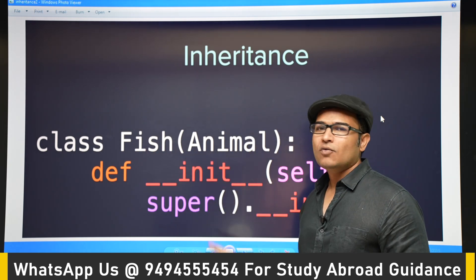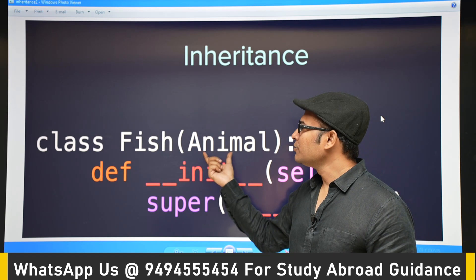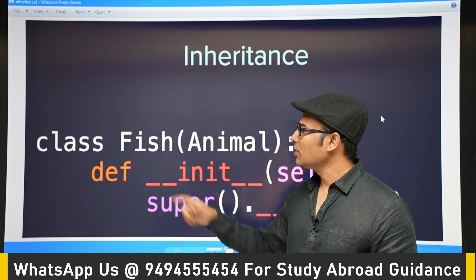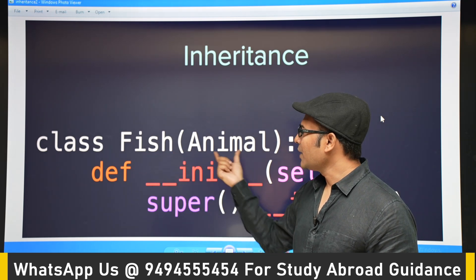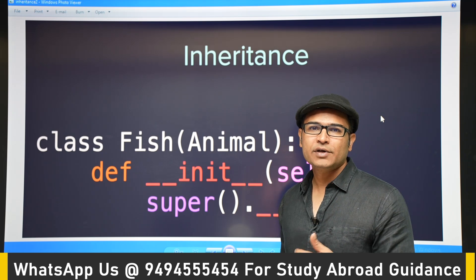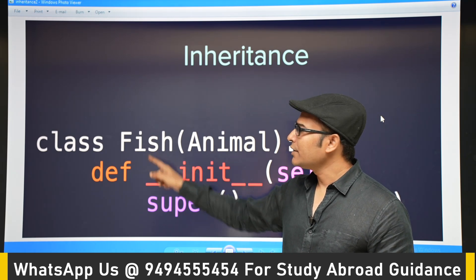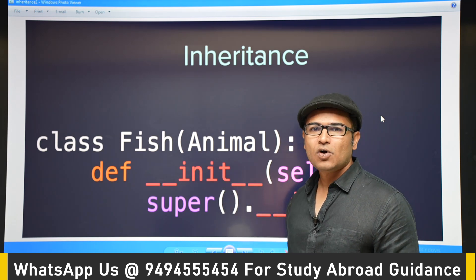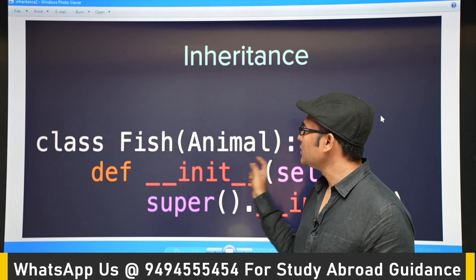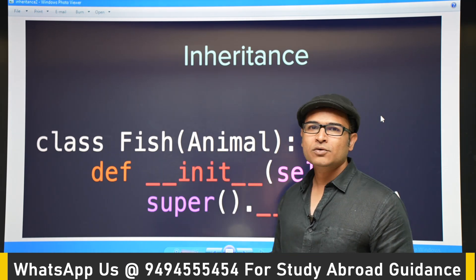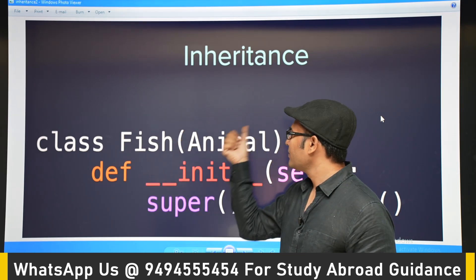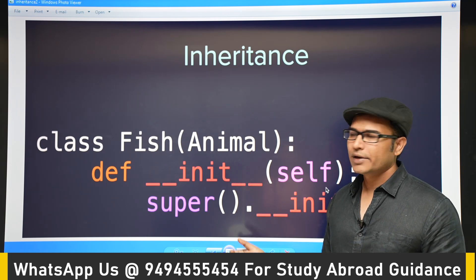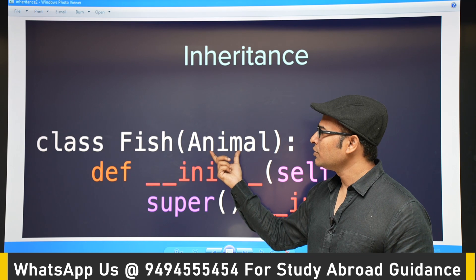Now, how do you inherit? Let's say there is a class called Fish and a class called Animal. Since fish is an animal, most of the attributes and methods of Animal will be used in Fish as well. In that case you write: class Fish(Animal). This is the syntax for inheritance. The class that is inheriting is called the subclass, and the class being inherited from is called the superclass — you write the superclass name in parentheses when defining the subclass.